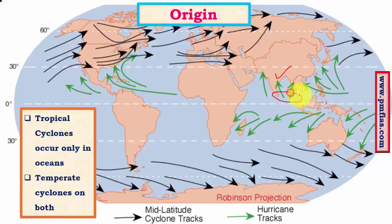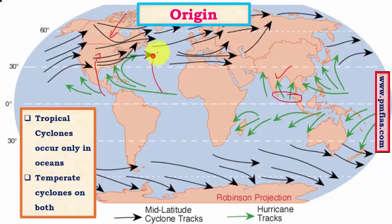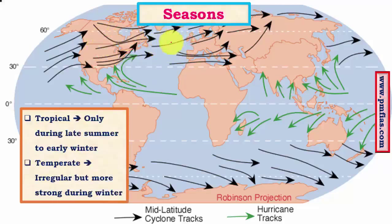Temperate cyclones, by contrast, form due to the convergence of air masses from the tropics and polar regions. These air masses can converge over continents or over oceans, so temperate cyclones can form both on land and at sea.